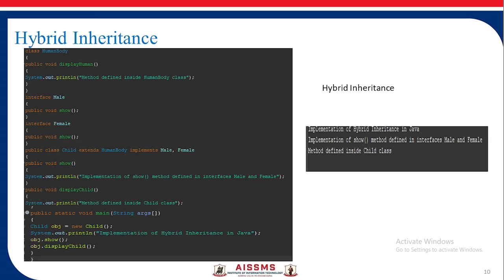Hybrid inheritance: a class HumanBody is created with a method displayHuman(). Two interfaces, Male and Female, are defined with abstract method show() and public void displayChild(). A class Child is then created which extends HumanBody and implements both Male and Female interfaces. The show() method, which is abstract in the interfaces, is implemented with a body. The displayChild() method is also defined in the Child class. When we create an object of the Child class and call show() and displayChild(), we get the output: 'implementation of hybrid inheritance in Java', 'implementation of show method defined in interfaces Male and Female', and 'method defined inside the child class'.